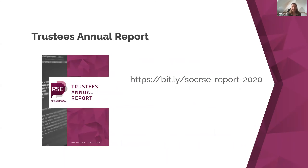We'll have a short 10-minute break between the two parts. A lot of the content of our trustees' presentations today is drawn from our first formal trustees' annual report. I'd really like to thank all the trustees, and particularly Paul Richmond, for putting together this annual report — it's a really good summary of where we are as a society and what we've done since our foundation in March 2019.